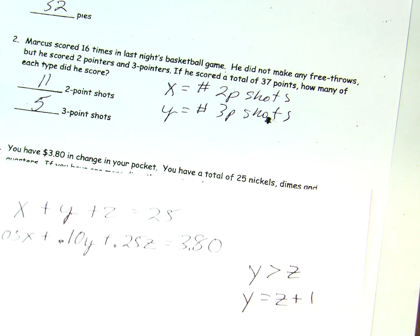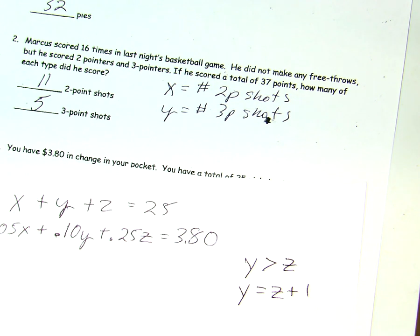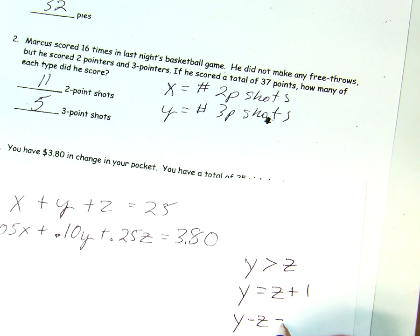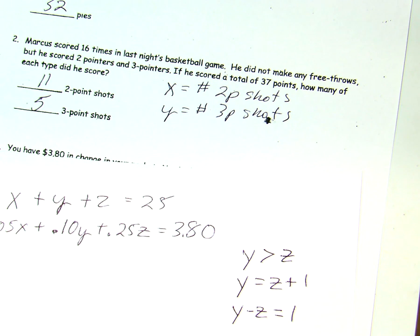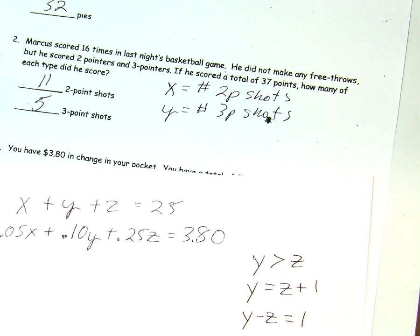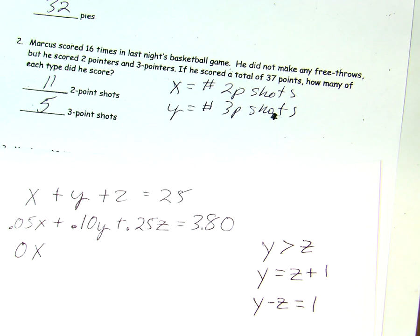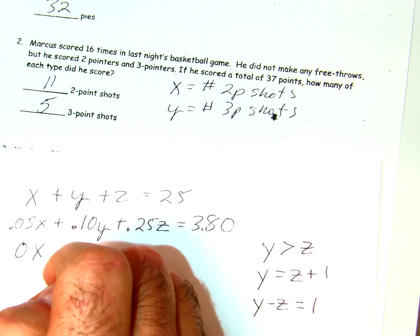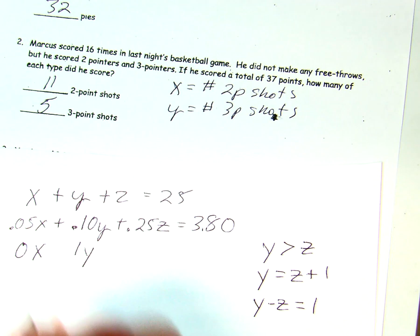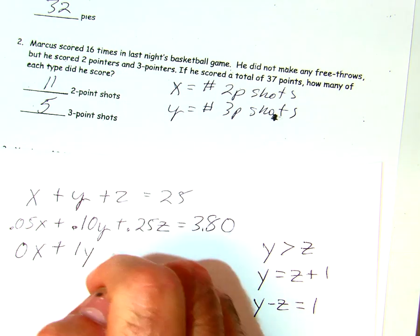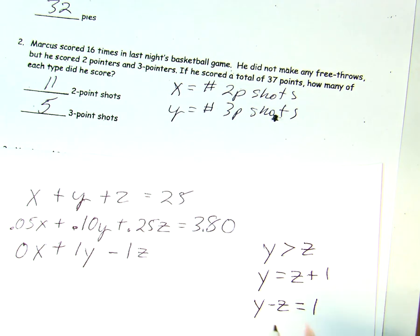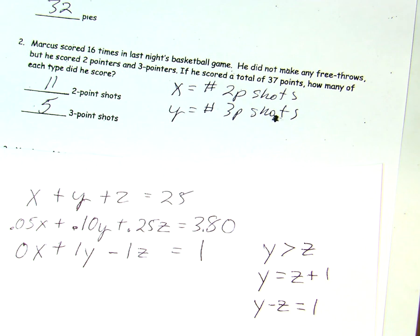But now, the trick part is, we've got to get all the variables on one side. So, if I subtract z, I have y minus z equals a positive 1. Now, we just put that in the equation. We have 0 nickels in this. We have a coefficient of 1y, and we have a coefficient for z of a negative 1z, and that equals 1.